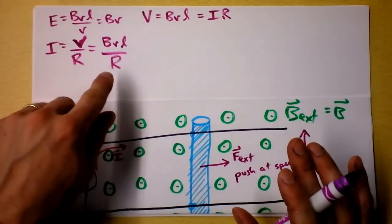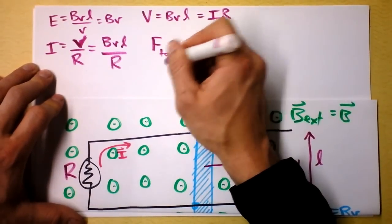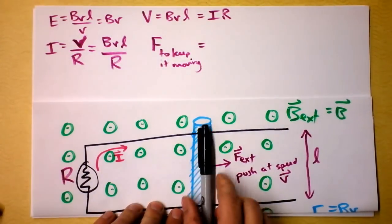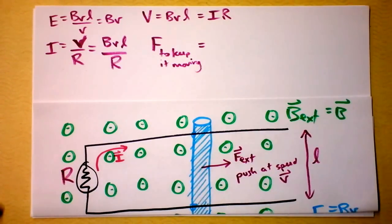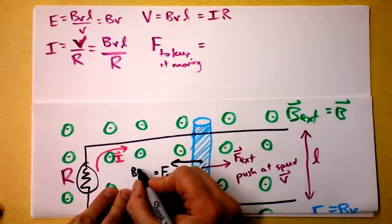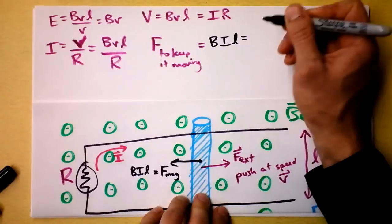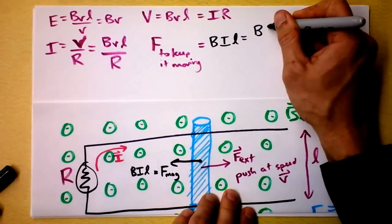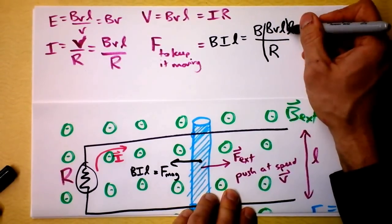Now, I might also be interested in finding what the force is. Force to keep it moving. That force to keep it moving is probably Bill, right? Because if the wire is moving in a magnetic field, then there's a force on the charges. There's a force actually on the wire as a result of the force on the charges. So to keep it moving, I need to counteract that force. This is the magnetic force on the wire, and it's B times I times L. So the force to keep it moving is B times I times L. And I know what I is, it's BVL over R. So I can plug that in, and I think I get B times BVL over R times L.